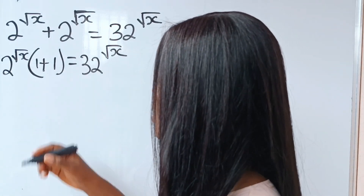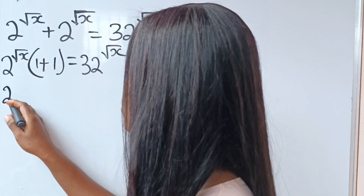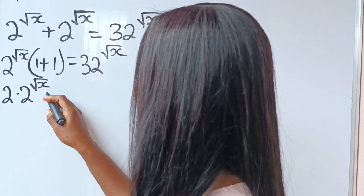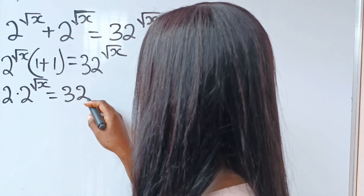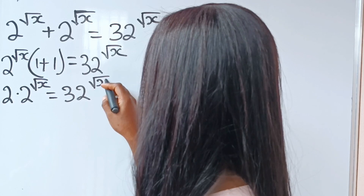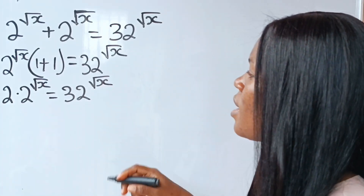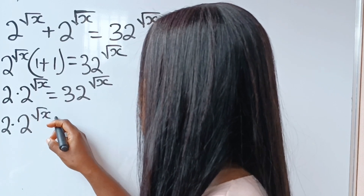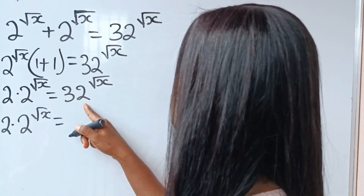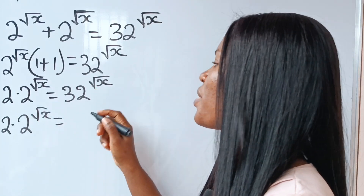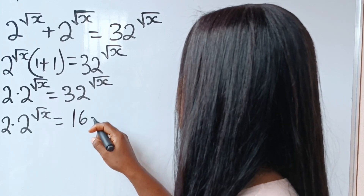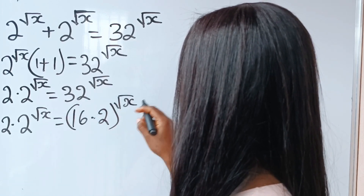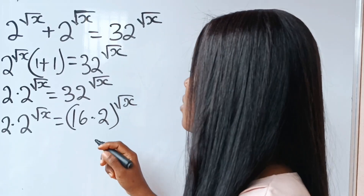1 plus 1 gives us 2, so we have 2 multiplied by 2 to the power of root x, which is equal to 32 to the power of root x. Now 32 can be written as 16 multiplied by 2, so we have everything raised to the power of root x.